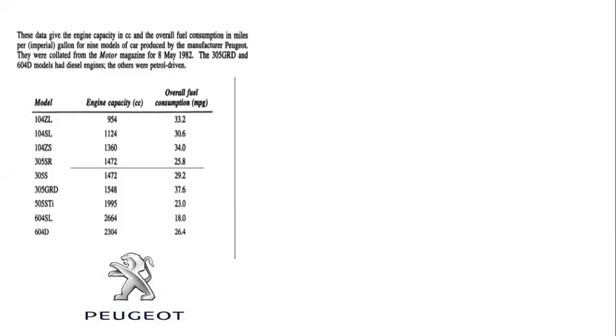On the left side of the screen here you'll see a data set that comes from the handbook of small data sets. This was a data set from 1982 and it was information collected from Motor Magazine on some data about Peugeot brand cars and in particular you'll see here data that they collected about nine different Peugeot models and it shows the engine capacity in cubic centimeters and also the fuel consumption in miles per gallon.